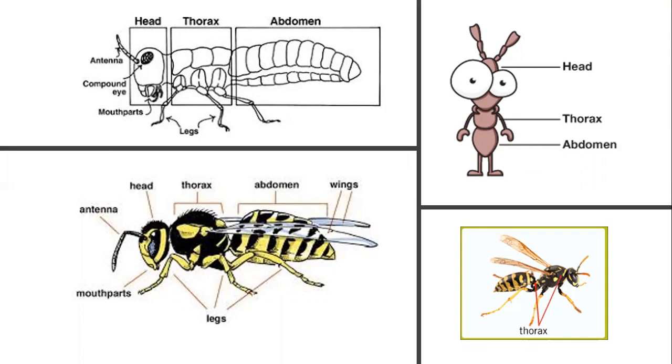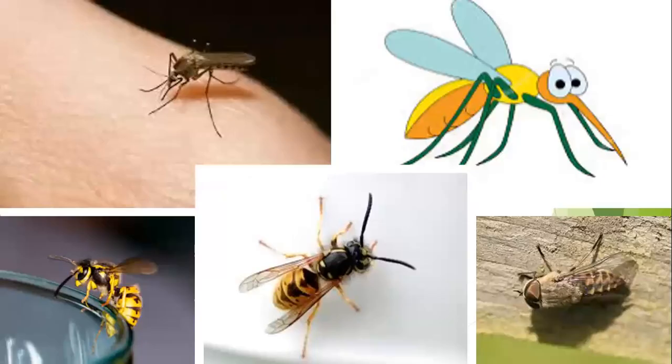Then the abdomen is the part where they keep all their organs - you'd have their heart, their digestive system - all stored in the abdomen. So it has the three sections: the head, the thorax, and the abdomen.